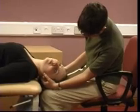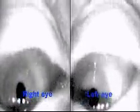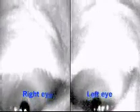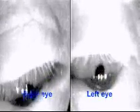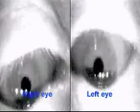Observe for nystagmus and note its direction, character and duration. This is an example of left sided BPPV. The vertical component is obvious here as the test was carried out without visual fixation.